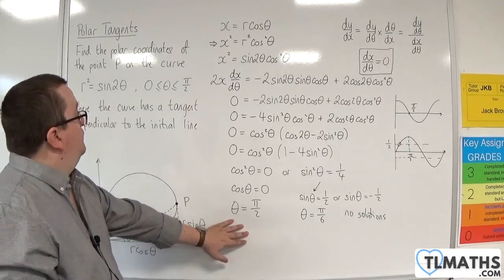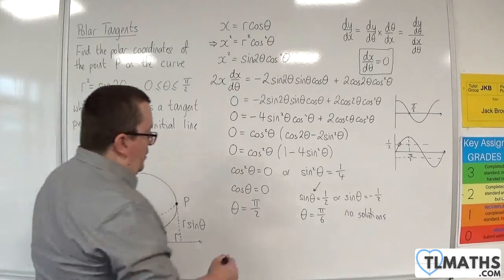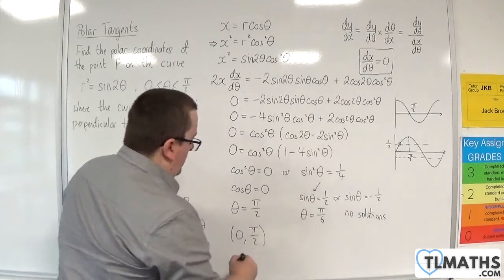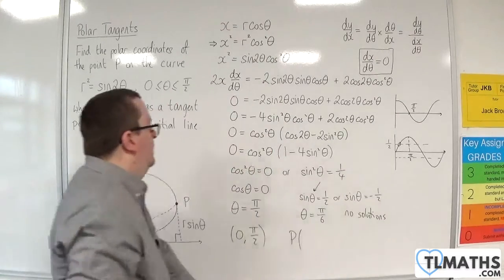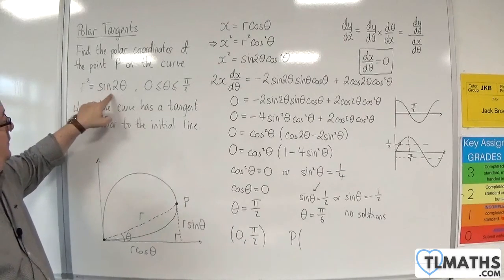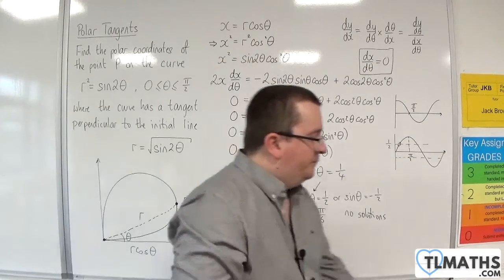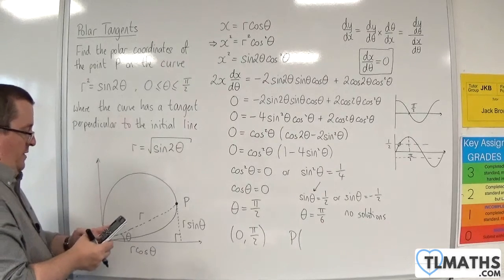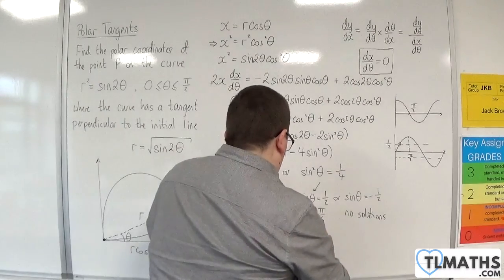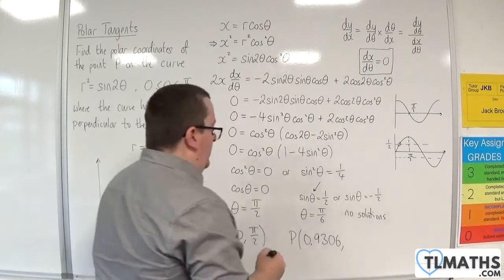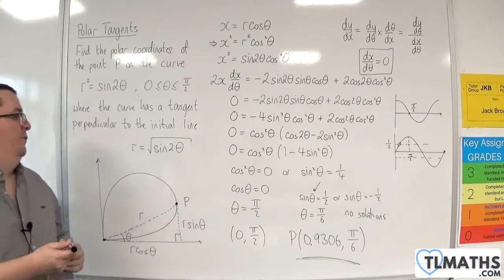When θ = π/2, r² = sin(π) = 0, so r = 0 — that gives the origin point, not point P. So we use θ = π/6. Then r = √(sin(2 × π/6)) = √(sin(π/3)), which gives approximately 0.9306 to 4 decimal places. So the polar coordinates of point P are (0.9306, π/6).